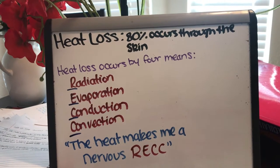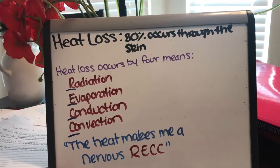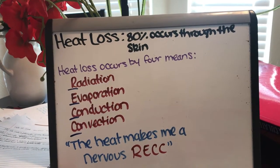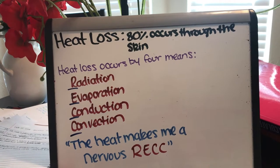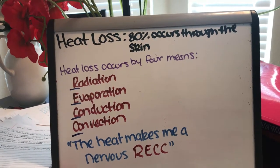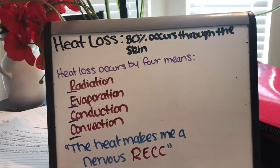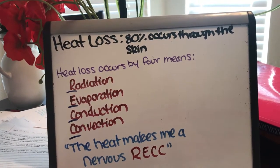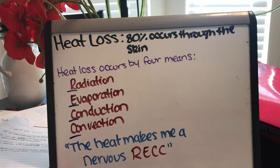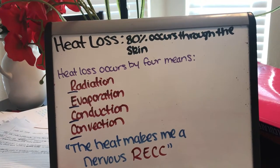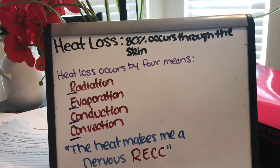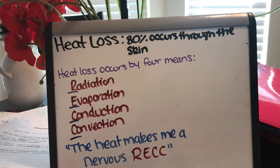Convection is the loss of heat by air currents moving over the surface of the skin. For example, a fan moves air across the surface of the skin, thereby constantly removing the layer of heated air next to the body.